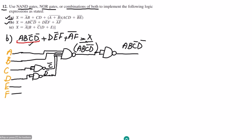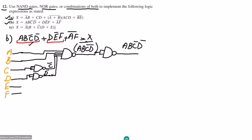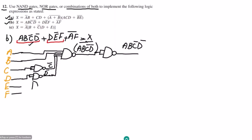Now I need to implement the second product term DE'F. First I need to complement e. I use a NAND gate with both inputs tied together, giving me e complement. Then I prepare to use another NAND gate for the full product.